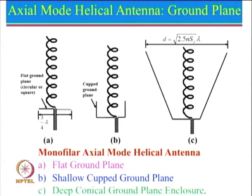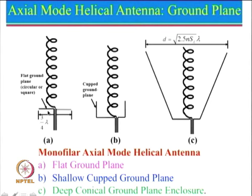Let us look into the axial mode helical antenna. For the axial mode, we can have a variety of ground planes depending upon the requirement. The helical antenna is fed here with a flat ground plane. We know that the diameter should be approximately equal to lambda/pi, because the circumference pi·d should be approximately equal to lambda, so d equals lambda/pi, which is approximately 0.3 lambda. The ground plane has to be larger than this, and the recommended minimum diameter of the ground plane is 0.75 lambda.